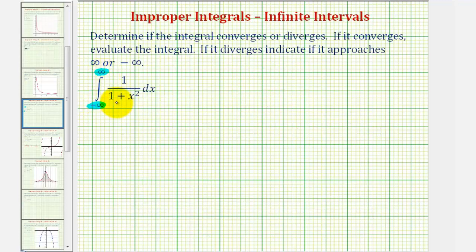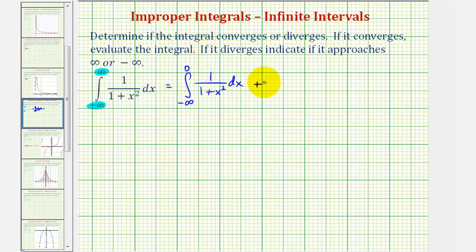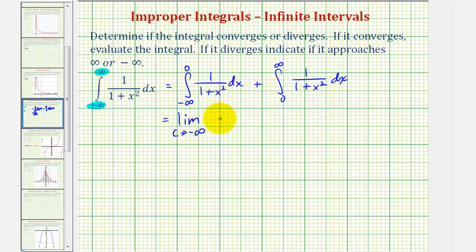Because the domain of our function is all real numbers, let's go ahead and break this up into two separate integrals using the constant zero. That means we'll first have the integral from negative infinity to zero, plus the integral from zero to positive infinity. Now we're going to rewrite this using limits: the limit as c approaches negative infinity of the integral from c to zero, plus the limit as c approaches positive infinity of the integral from zero to c.